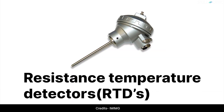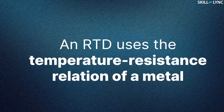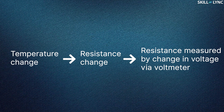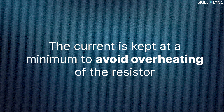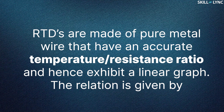Next, we have resistance temperature detectors or RTDs. An RTD uses the temperature-resistance relation of a metal. In practice, a constant current is passed through an RTD. As the temperature of the metal changes, the resistance of the metal also changes. This creates a change in the voltage across the sensor which can be measured via a voltmeter. The voltage indicates the change in temperature and thus the temperature change is measured. The current flowing across the sensor is kept at a minimum to avoid overheating of the resistor. RTDs are made of pure metal wire that have an accurate temperature-resistance ratio and hence exhibit a linear graph.